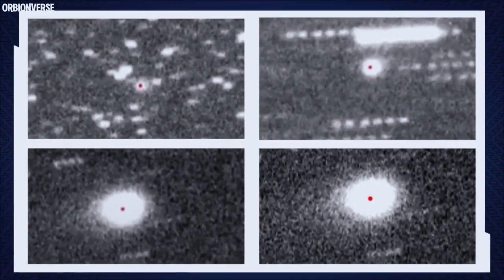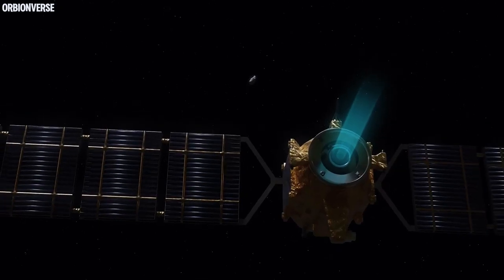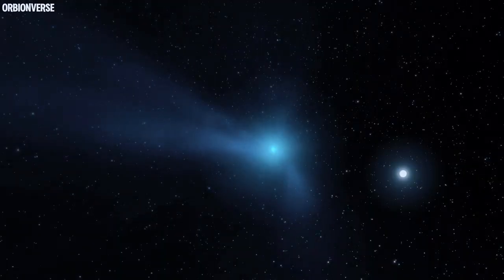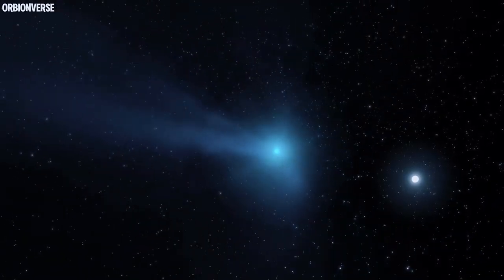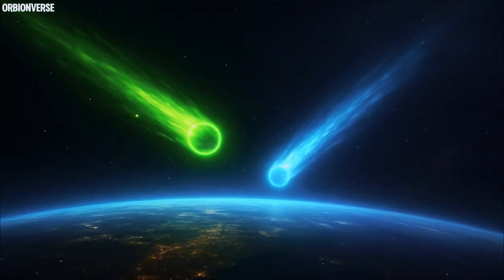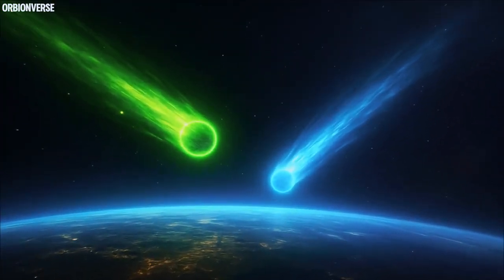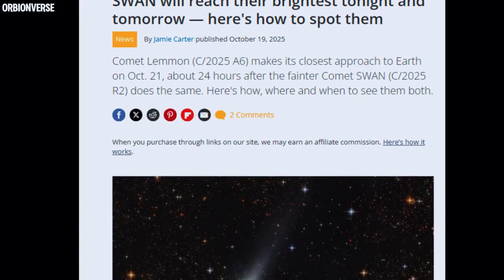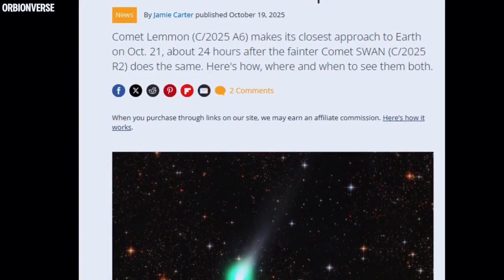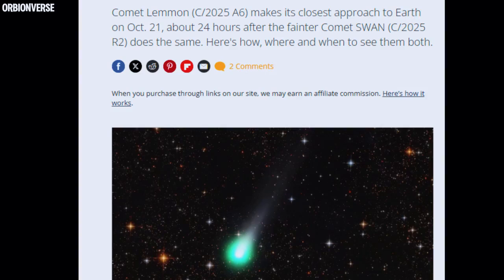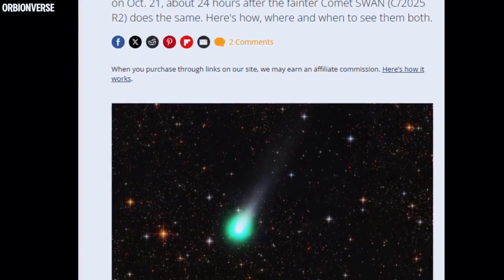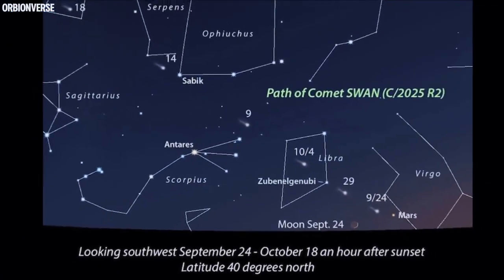But 3I Atlas wasn't alone. Because while this interstellar traveler moved toward the sun, two other comets began to make headlines back on Earth. Comet C/2025 R2 Swan and Comet Lemon, both recently discovered, appeared to be approaching Earth's orbit. At first, they were dismissed as ordinary icy visitors.